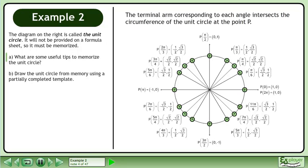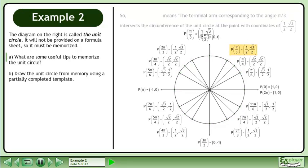The terminal arm corresponding to each angle intersects the circumference of the Unit Circle at the point P. So P at π/3 equals 1/2, √3/2 means the terminal arm corresponding to the angle π/3 intersects the circumference of the Unit Circle at the point with coordinates 1/2, √3/2.